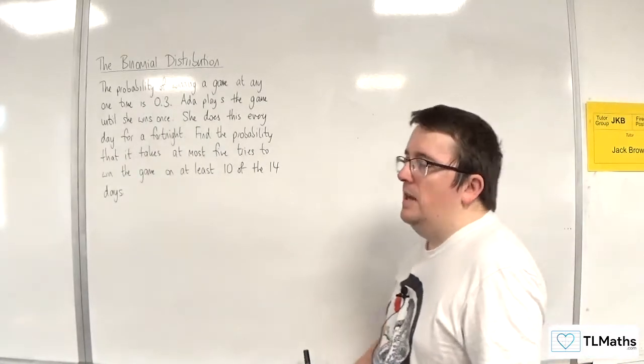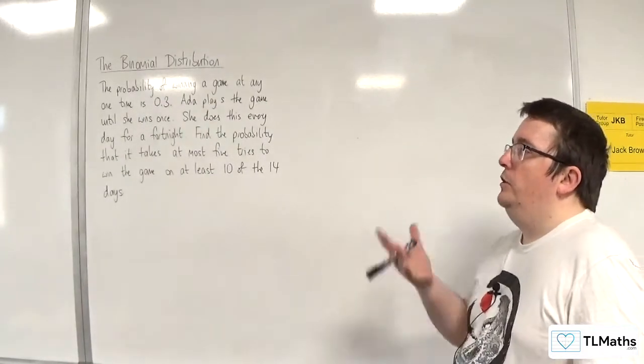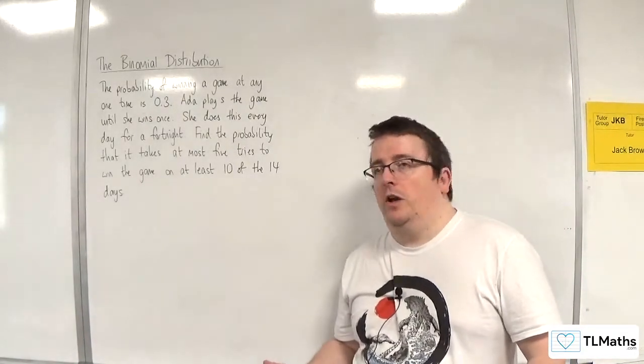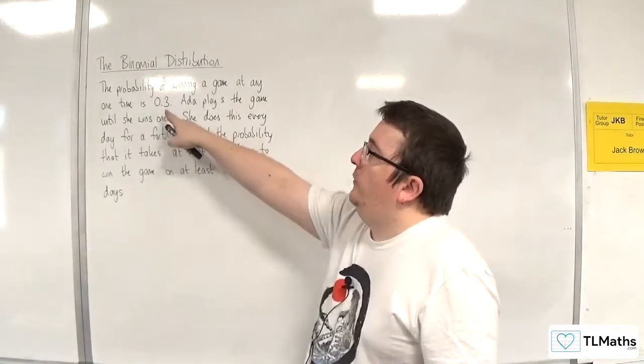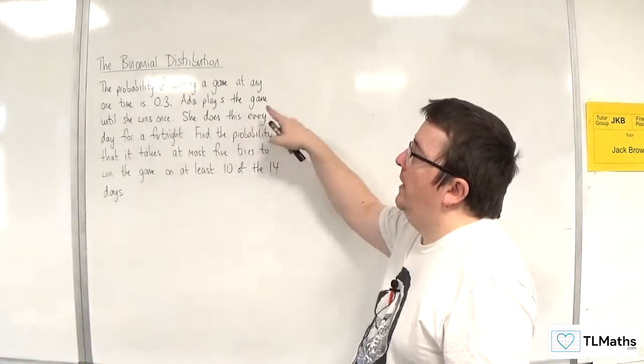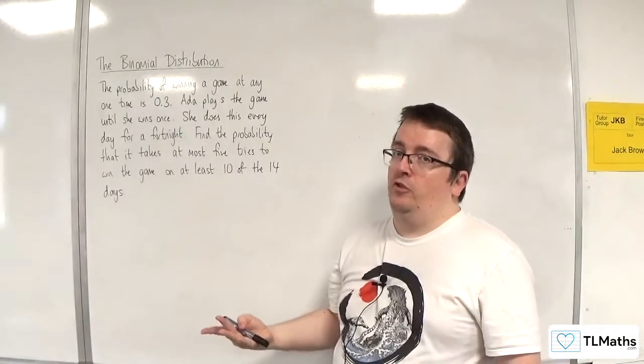Okay, so there's a lot of numbers being thrown around in this problem. First of all, you should identify that there is a geometric distribution going on. The fact that it's telling you the probability of winning a game at any one time is 0.3, and she's playing the game until she wins once. That's a geometric distribution there.